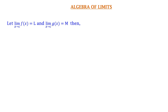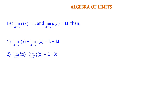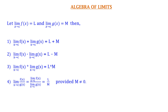Next, Algebra of Limits. Let limit x tends to c of f(x) = l and limit x tends to c of g(x) = m. Then: First, limit x tends to c of f(x) + limit x tends to c of g(x) = l + m. Second, limit x tends to c of f(x) - limit x tends to c of g(x) = l - m. Third, limit x tends to c of f(x) multiplied by limit x tends to c of g(x) = l · m. And fourth, limit x tends to c of f(x)/g(x) = [limit x tends to c of f(x)] / [limit x tends to c of g(x)] = l/m, provided that m is non-zero.